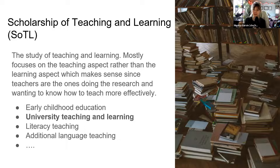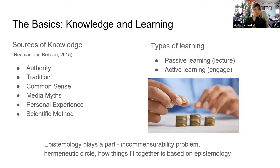The one I'm going to focus on today, most relevant for us, is the university teaching and learning space. There are different sources of knowledge: we collect knowledge from authorities, traditions, common sense, media myths, personal experiences, and the scientific method. These are all sources of how we obtain knowledge.